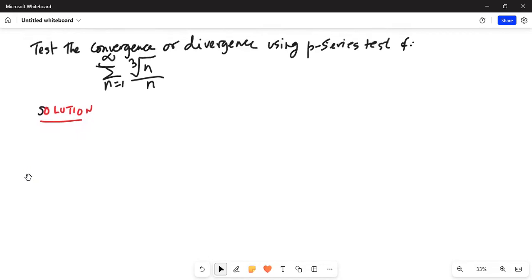Test the convergence or divergence of this series using p-series test. The series that is given to us is summation n equals 1 through infinity, cube root of n divided by n. So let's solve this problem.